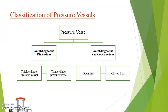The classification of pressure vessels can be done according to dimensions and according to end constructions. Dimensions refer to the most important dimensional parameter — the thickness, also known as wall thickness. Based on this, pressure vessels are classified into thick cylinder pressure vessels and thin cylinder pressure vessels, each with different definitions serving different applications.